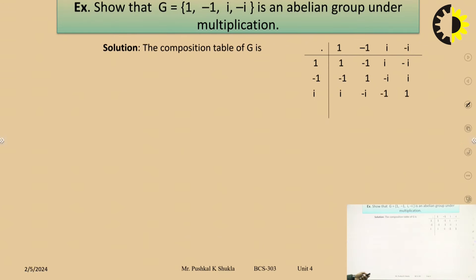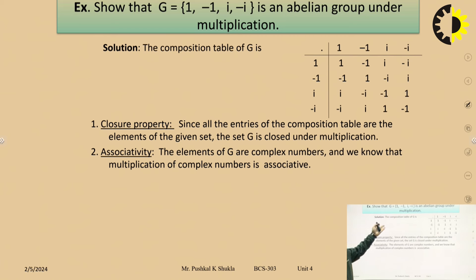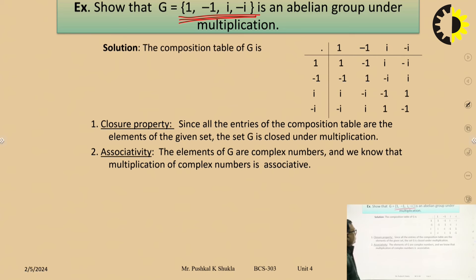Another very important question — frequently asked in competitive examinations: show that G = {1, −1, i, −i} is an abelian group under multiplication. This question may also be asked as: show that the fourth roots of unity form an abelian group under multiplication.